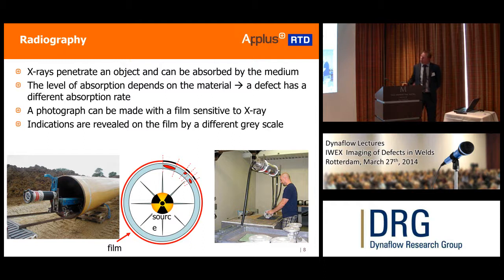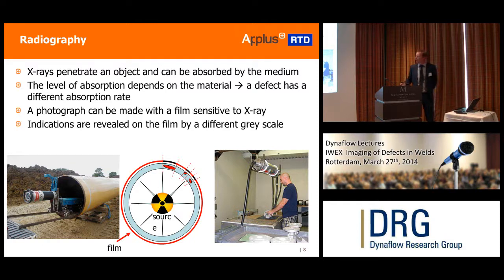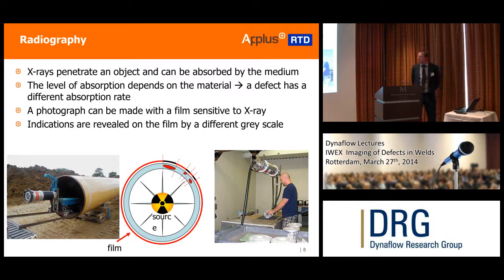This is an example of an internal inspection where you need access inside the pipe. This is the X-ray source, and the film is placed around the pipe — on a curved wall. In another configuration, the source is placed above and the X-rays propagate all the way through.